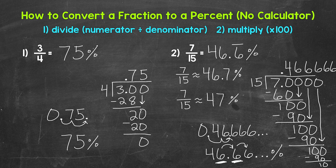When we come across repeating decimals, we can still write them as a percent. Or even if we come across long decimals that don't repeat, we're able to round those if we need to. Let's move on to numbers three and four.